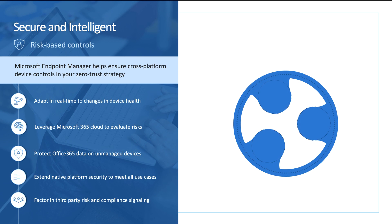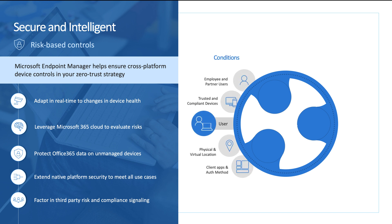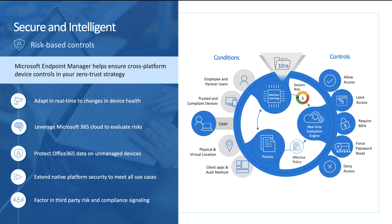When I think about risk-based controls, I mentioned conditional access. As that device adapts to the different environments it may be in, and if there's ransomware or there are threats on that machine, we can actually use conditional access to shut down that machine's access to corporate resources when there's a threat on it.